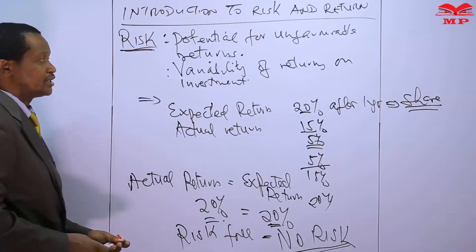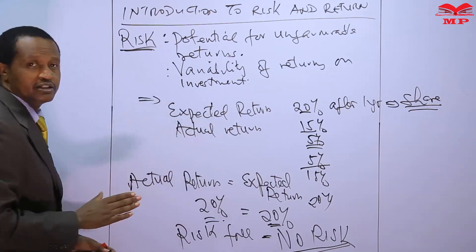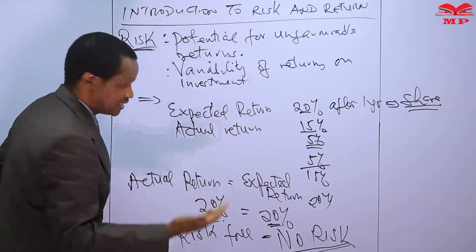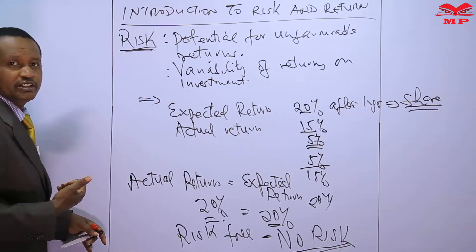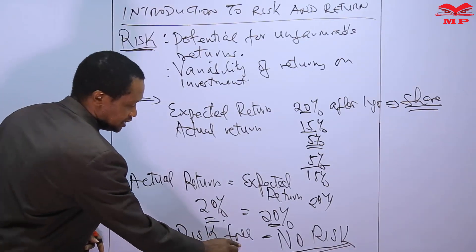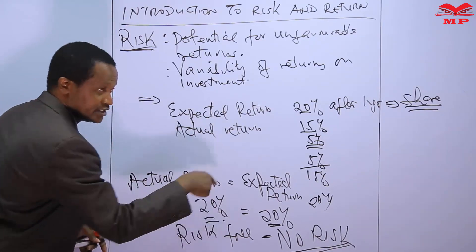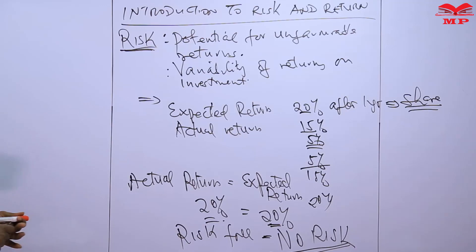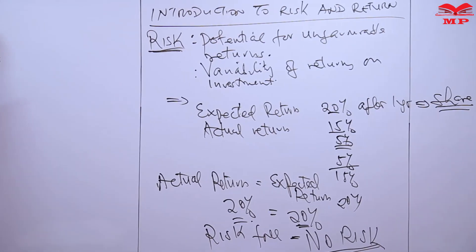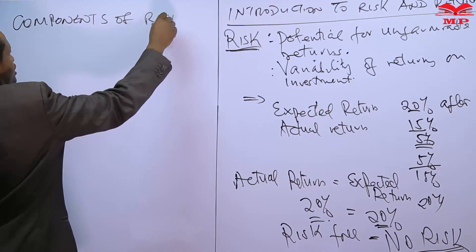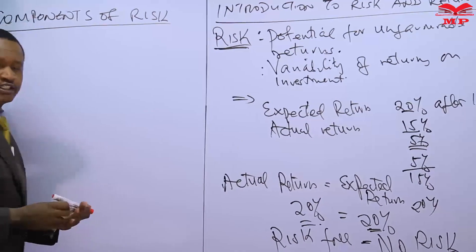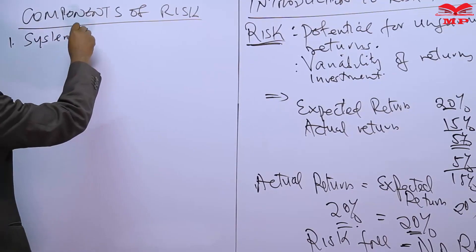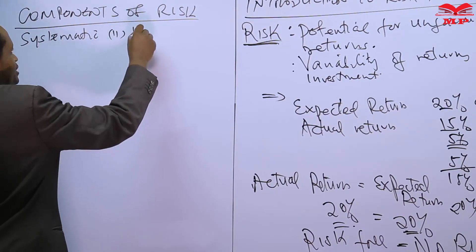So in simple terms, that is how we define risk. Risk is the potential for unfavorable return. Where there is no variability in expected return, there is no risk and such an investment or asset is risk-free, meaning free of variability in expected return. We will now move ahead and look at the components of risk.